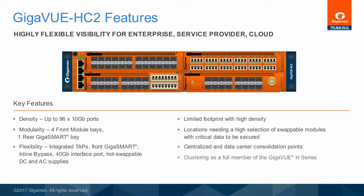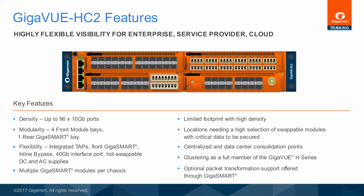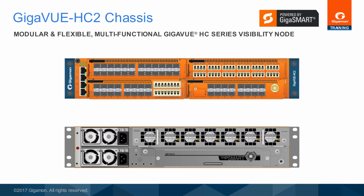Flexibility: The front module bays support any combination of optional monitor port, tap, and inline bypass modules. The Gigaview HC2 also offers hot-swappable AC and DC supplies for even more flexibility. Because there are monitor ports on the front Gigasmart modules, all module bays can be used for Gigasmart modules in order to achieve maximum packet transformation support. The front of the two RU chassis shows the front-to-back airflow design, as well as four modular bays where you can mix and match any combination of port, tap, Gigasmart, and bypass modules.